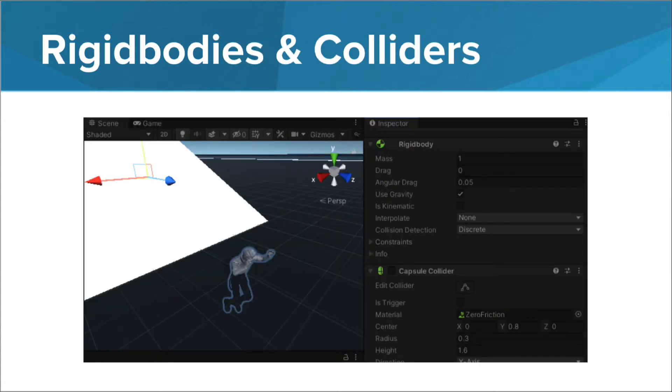While the rigid body component applies physics to game objects like gravity, it doesn't stop a game object from falling through other objects. For that, your game objects need a type of collider, or a character controller, which has its own built-in capsule collider.